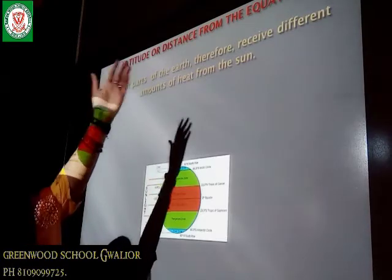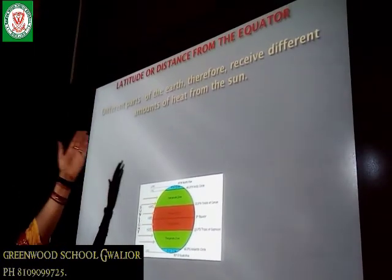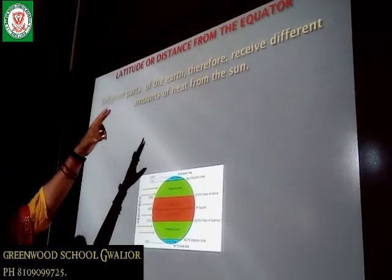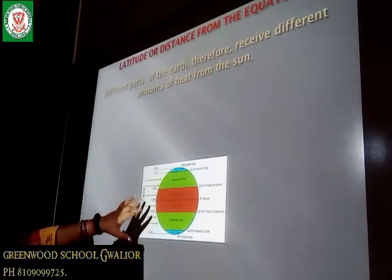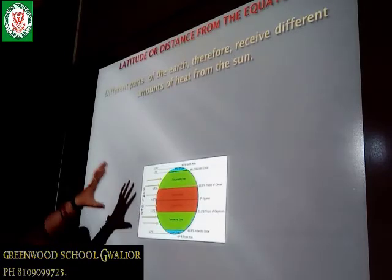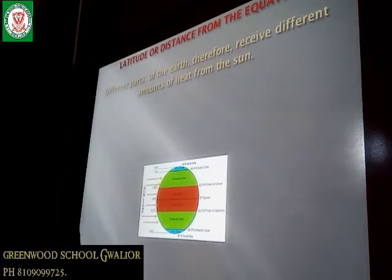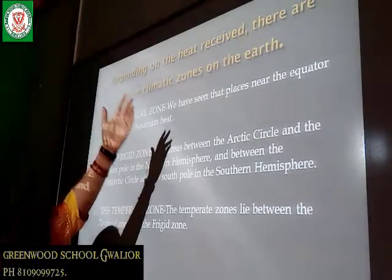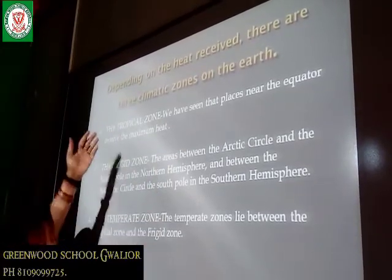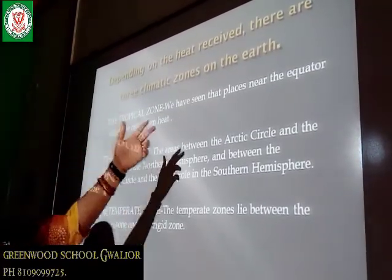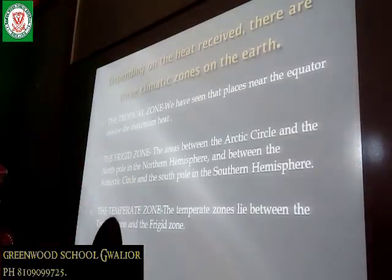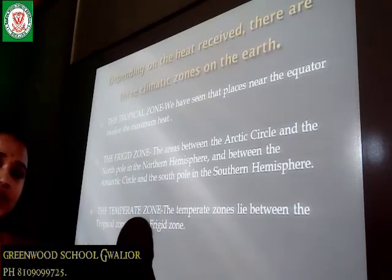Now, distance from the equator. Different parts of the earth receive different amounts of heat from the sun. As you see in the picture, the tropical zone always receives straight sunlight. So depending on the heat received, there are three climatic zones on the earth. The tropical zone — places near the equator receive the maximum heat, and this tropical zone is also known as the torrid zone.